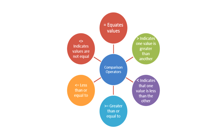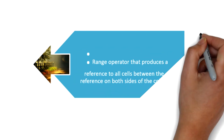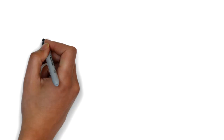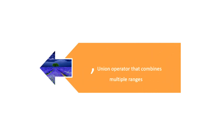Greater than indicates one value is greater than another. Less than indicates one value is less than another. Greater than or equal to, and less than or equal to. Not equal to indicates values are not equal. Colon is a range operator that produces a reference to all cells between the references on both sides of the colon. Comma is a union operator that combines multiple ranges.